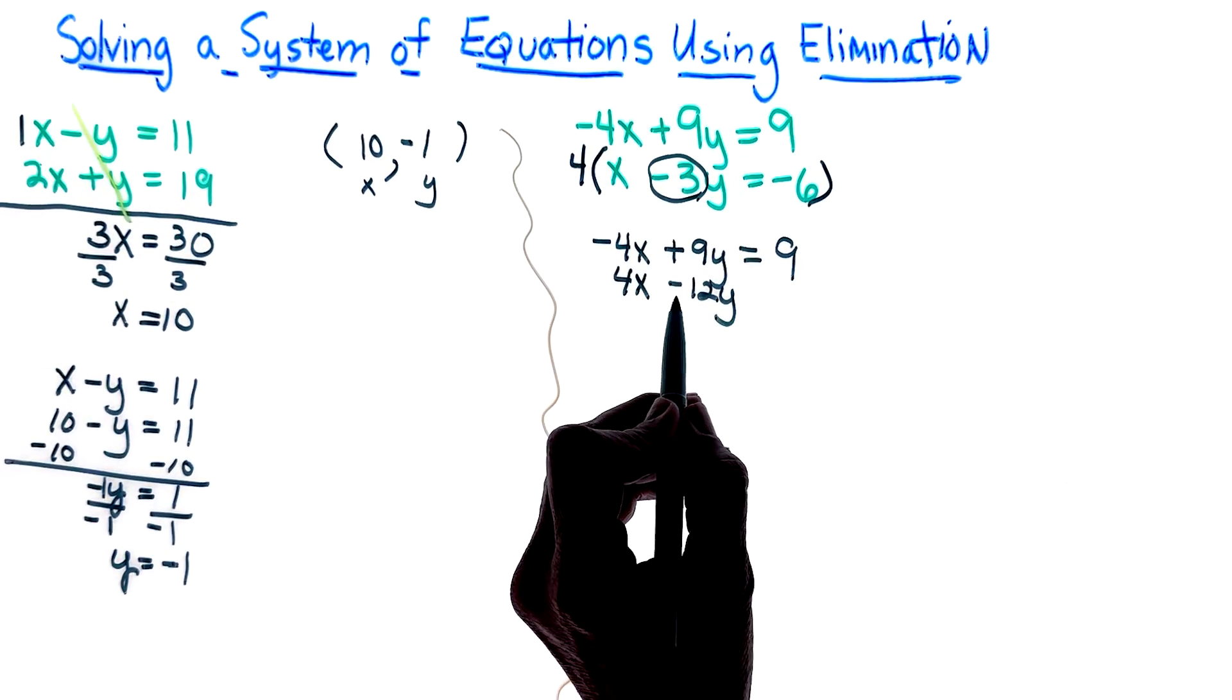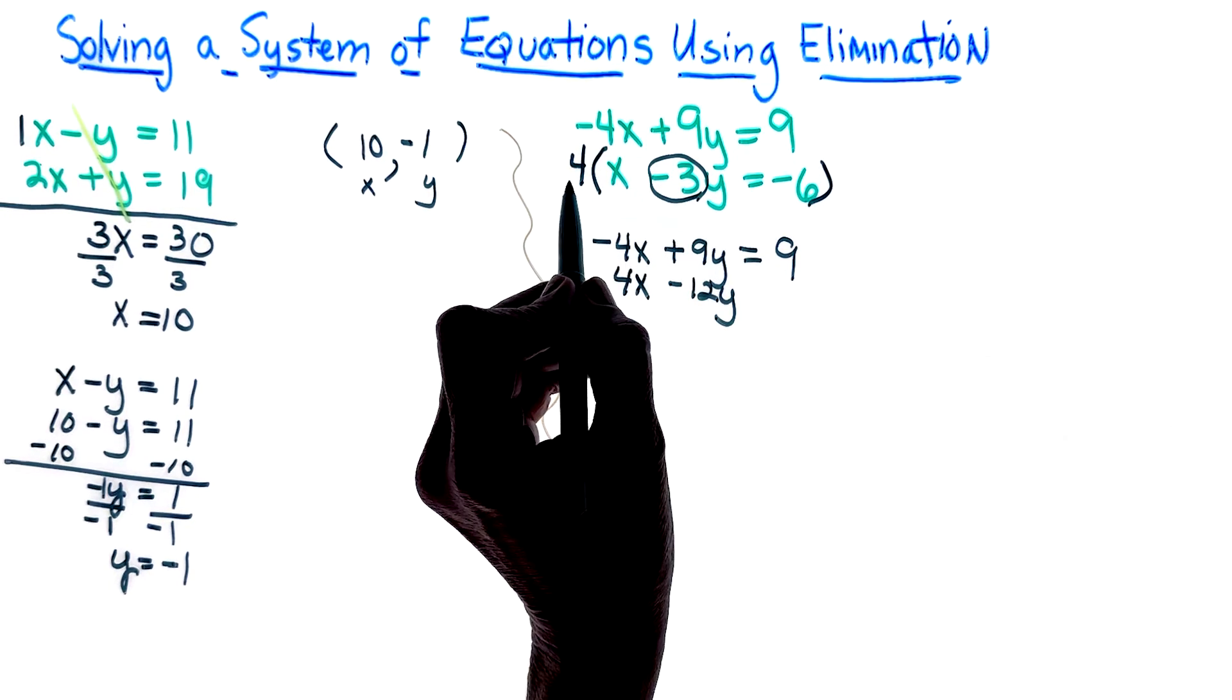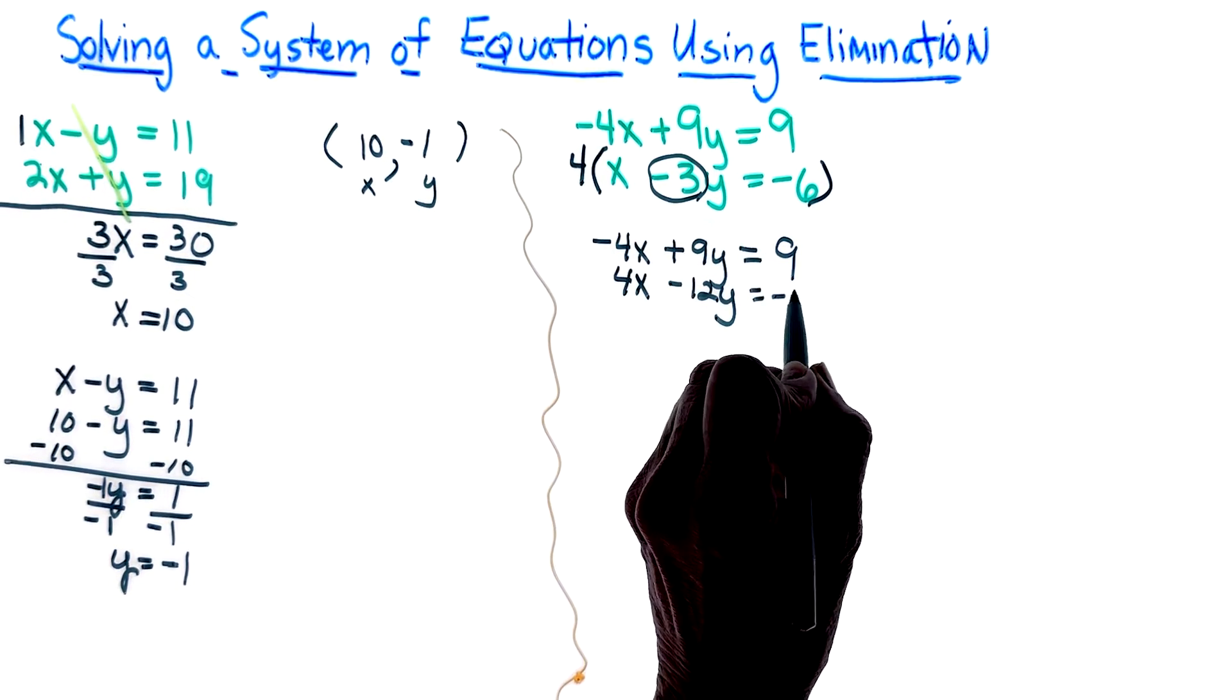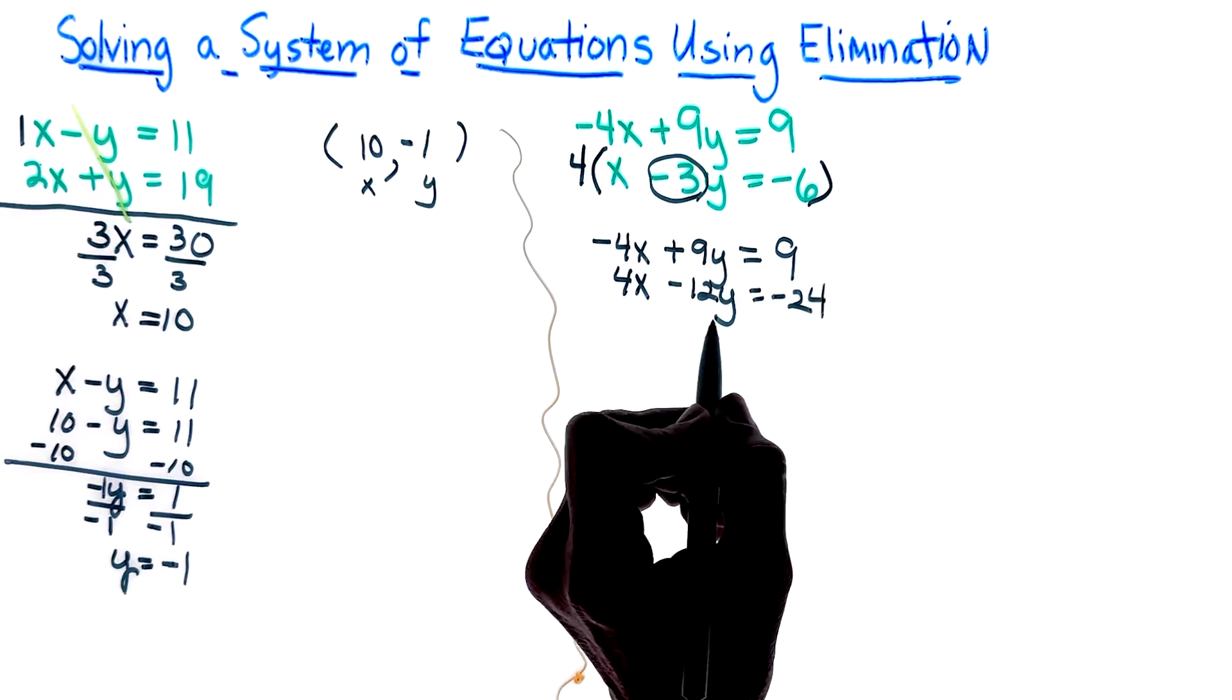And I write that as minus 12y. 4 times negative 6 is equal to negative 24.